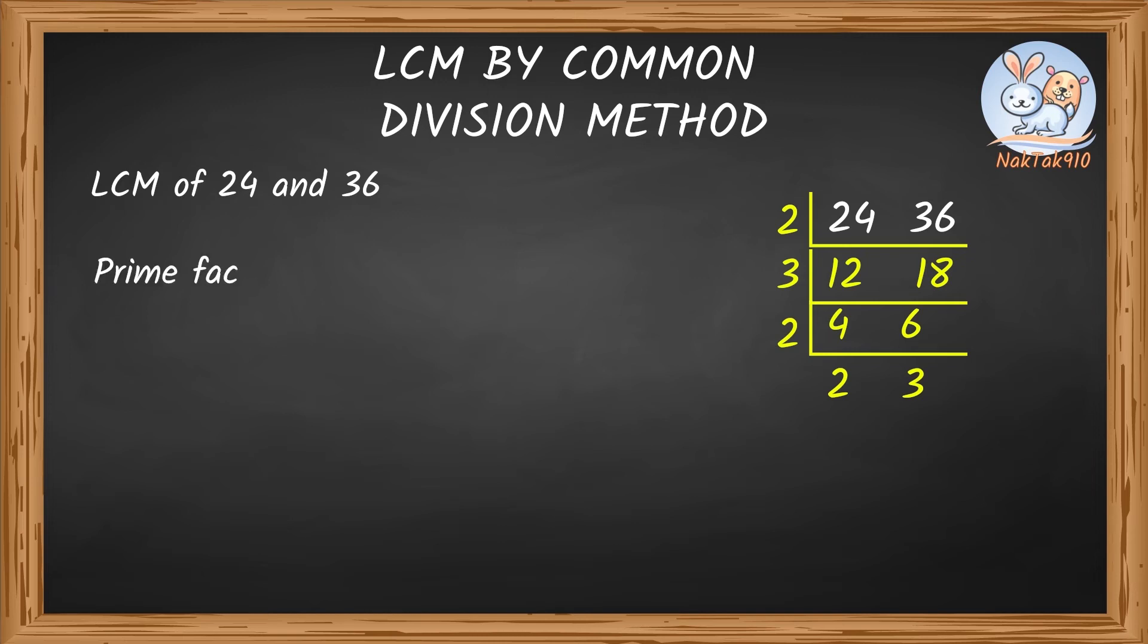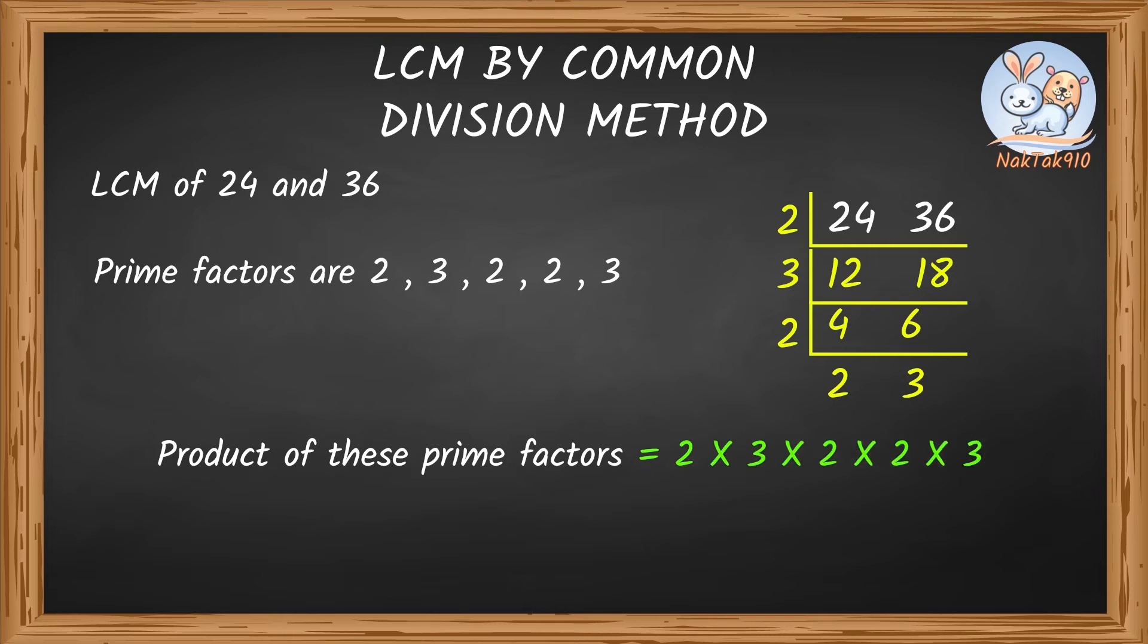We are left with 2 and 3. Both are prime numbers. Let's stop here and multiply all the factors. 2 times 3 times 2 times 2 times 3. 2 times 3 is 6. 6 times 3 is 12. 2 times 3 is 6. So 12 times 6 is 72. That means LCM of 24 and 36 is 72.